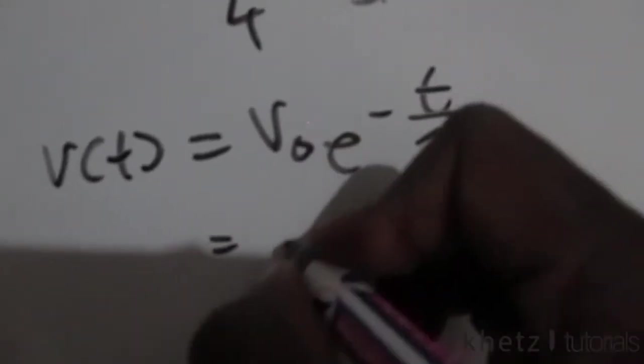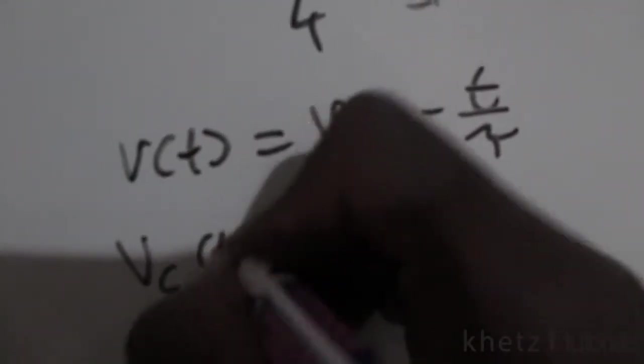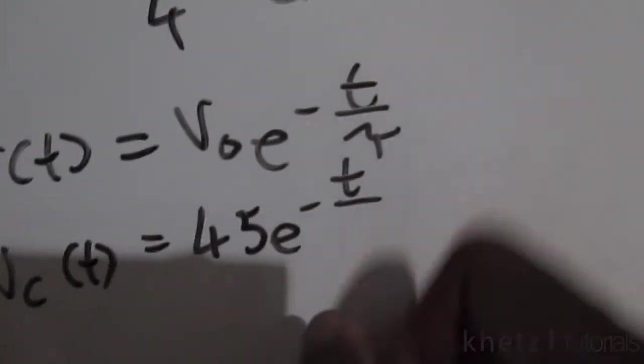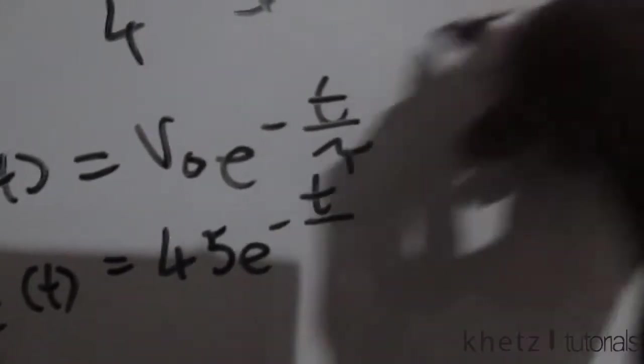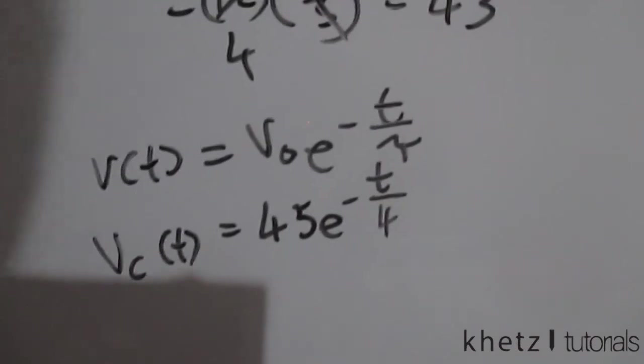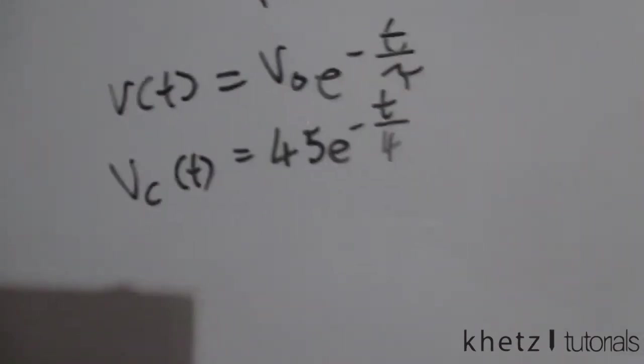So the answer for Vc(t) equals 45 e to the minus t divided by the time constant which we found to be 4. Now 1 over 4 is 0.25, and that is the common notation which is basically used.